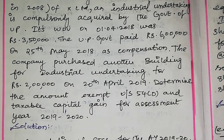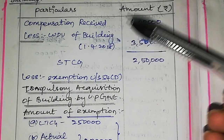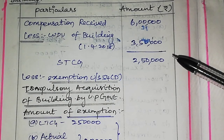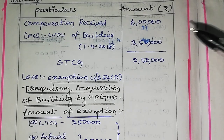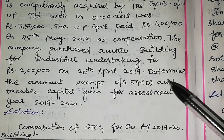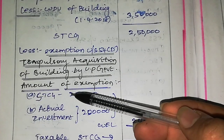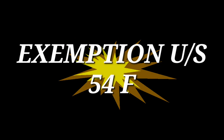Even though the period of holding is more than 2 years, for depreciable assets, short-term capital gain is computed — long-term capital gain does not apply. Exemption is claimable under Section 54D. Compensation received is Rs. 6 lakh, less written down value Rs. 3,50,000 gives short-term capital gain of Rs. 2,50,000. Actual investment is Rs. 2 lakh. Whichever is least is Rs. 2 lakh as exemption. Remaining taxable short-term capital gain is Rs. 50,000.